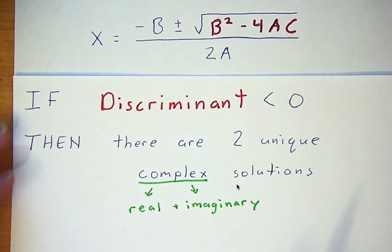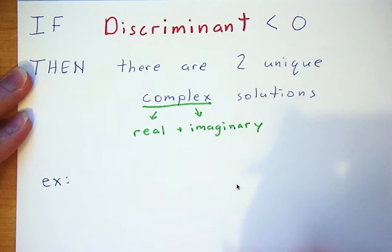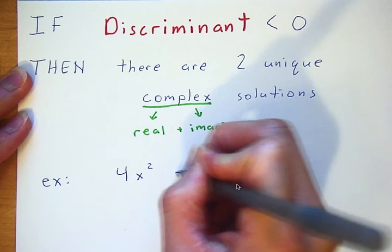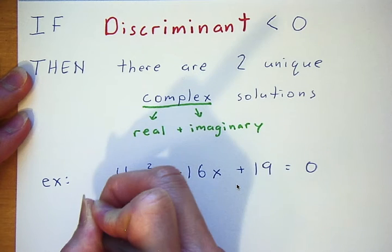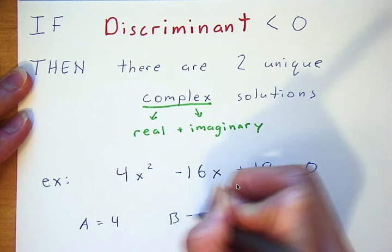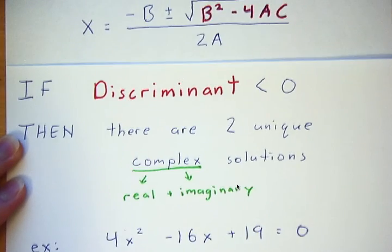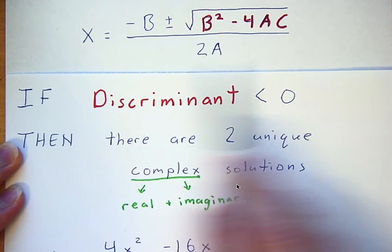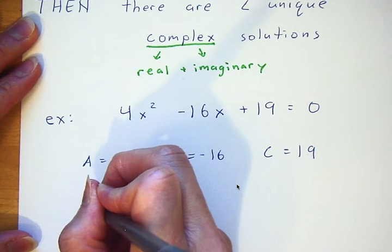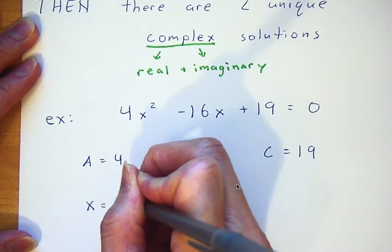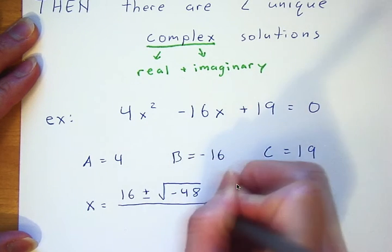Let's give an example. If I have 4x squared minus 16x plus 19 equals zero, my a is equal to 4, b is equal to negative 16, and c is equal to 19. Plugging those three values into the quadratic equation, before simplifying I get x equals 16 plus or minus the square root of negative 48, over 8.